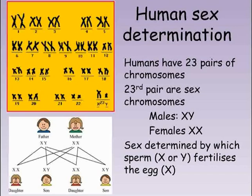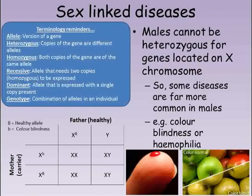In B1, we looked at how genetic diseases such as cystic fibrosis and sickle cell disease are inherited through recessive alleles. Because these alleles are recessive, in order to get the disease, you need to inherit two copies of the allele, making you homozygous.